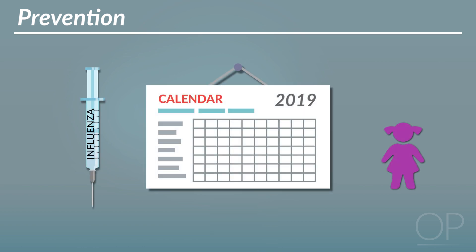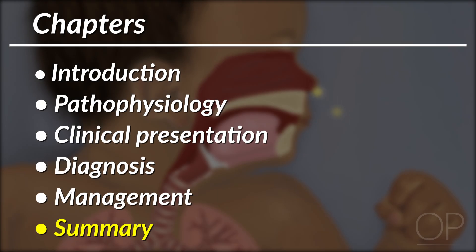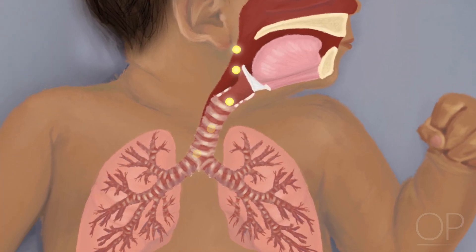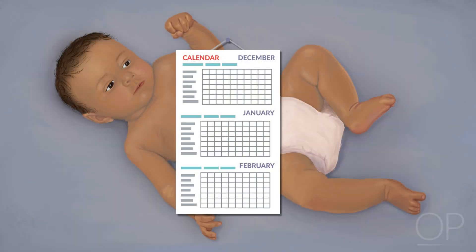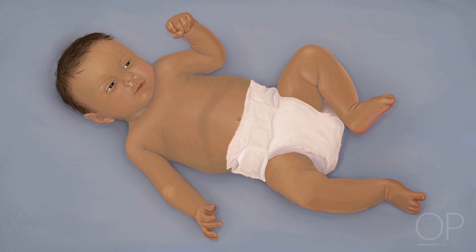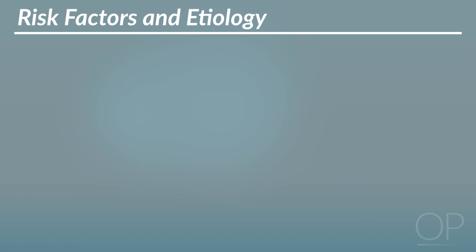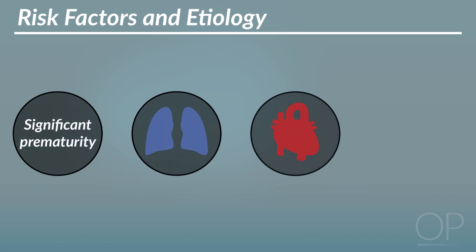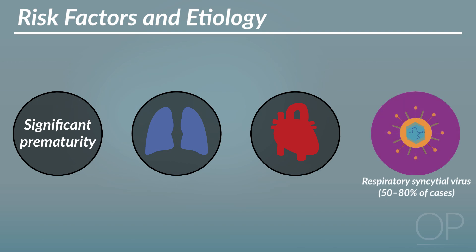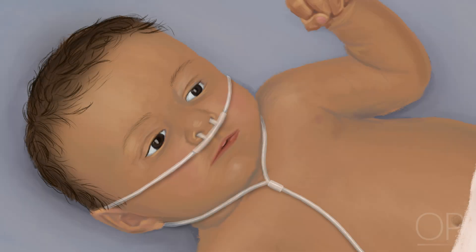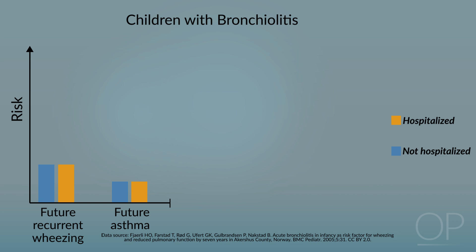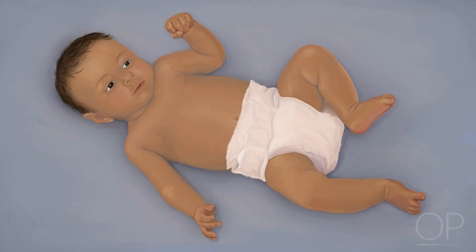Influenza vaccination should be given annually to children over six months of age. In summary, bronchiolitis is a viral lower respiratory tract infection affecting infants and young children, particularly in the winter months, and classically presents with increased work of breathing and coarse breath sounds. Bronchiolitis accounts for a significant number of admissions and spending of health care dollars. Infants at higher risk for severe infection include those born prematurely and those with underlying pulmonary or cardiac disease. The most common viral agent is RSV. Treatment is largely supportive with particular attention paid to pulmonary toilet and correction of dehydration. Hospitalization with bronchiolitis is associated with future recurrent wheeze and asthma, though the causation has yet to be firmly established. Thank you for watching this video on bronchiolitis.